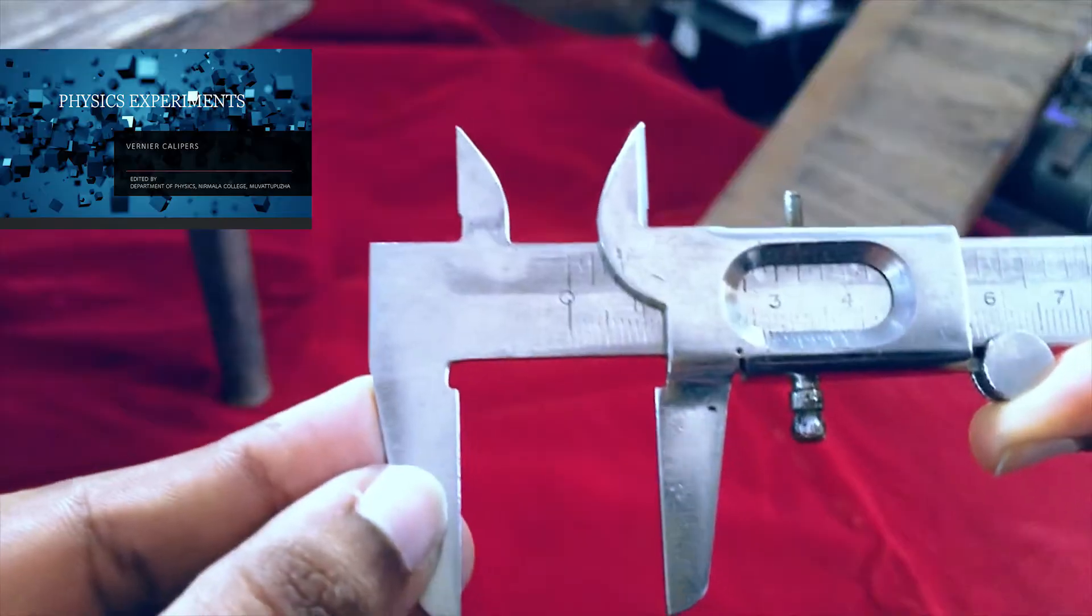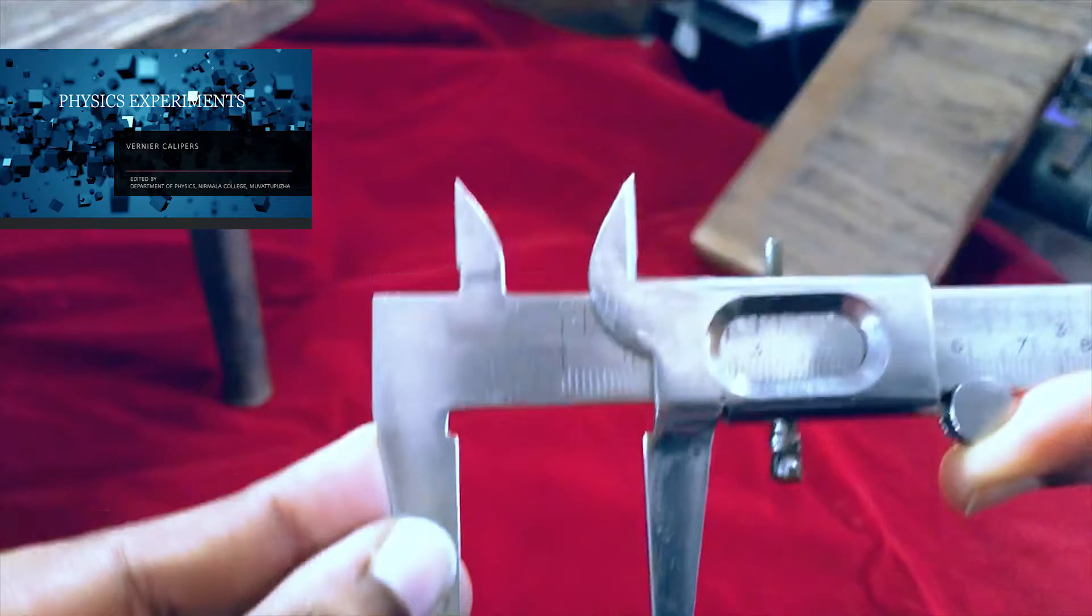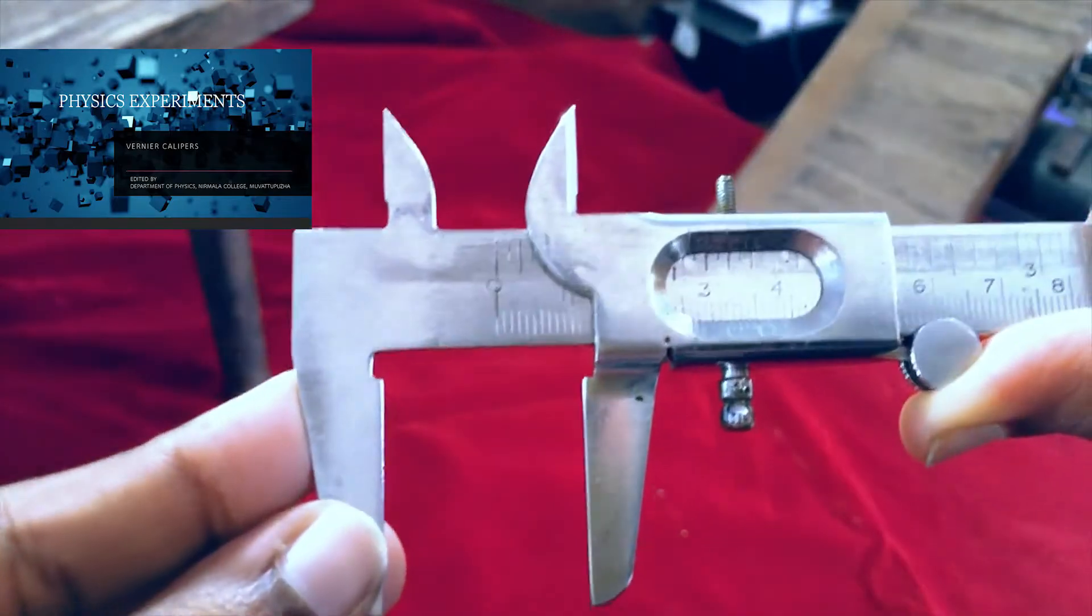Then we have least count. Value of one main scale division divided by number of divisions on Vernier Scale. That is equal to 1 by 10, that is equal to 0.1 mm.